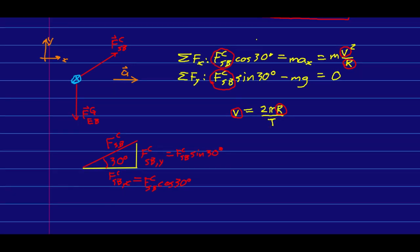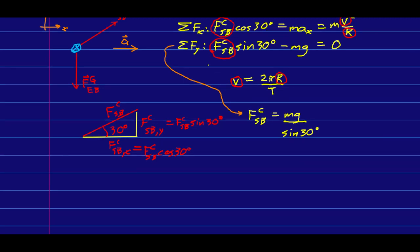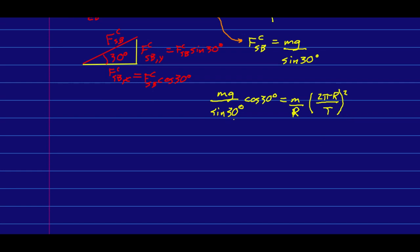So I'm going to start by eliminating the force due to the string, the magnitude. Out of the y component here, I can just solve for it. And then I'm going to use that to eliminate it from the x-component equation. And at the same time, I'm going to substitute in for v. So my x-component equation becomes this. And I can solve that for r, because r is the only unknown left in it. So I'm just going to solve this equation for r now.